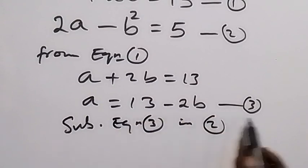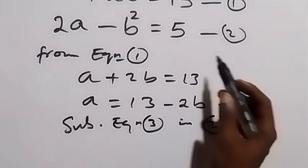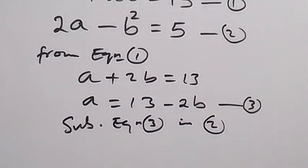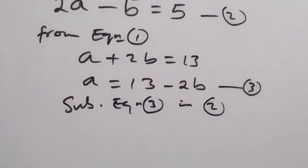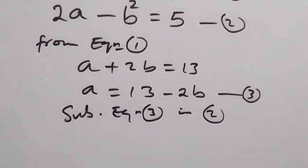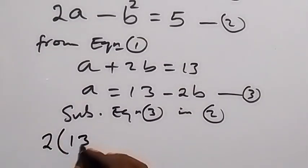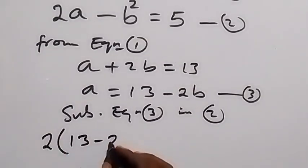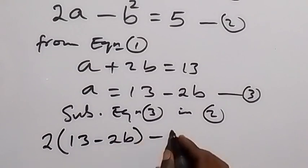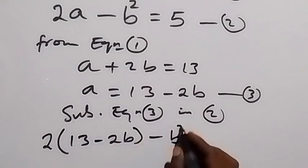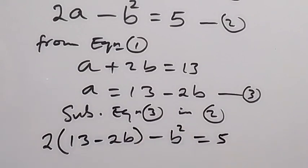We replace equation 3 in equation 2. Equation 2 becomes 2 times bracket 13 minus 2b, minus b squared, equals 5. From here we expand this bracket.